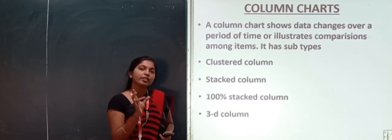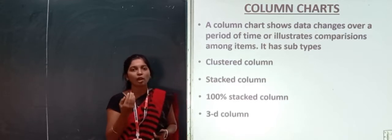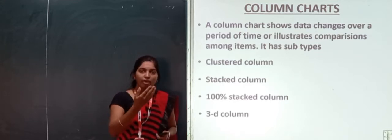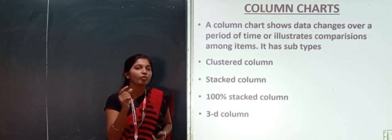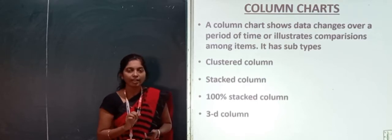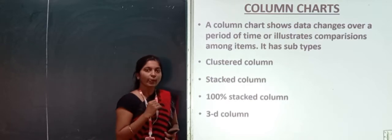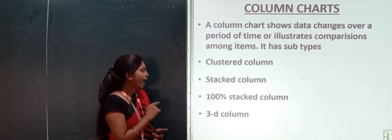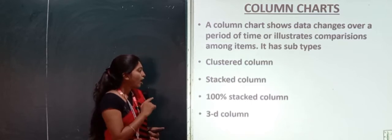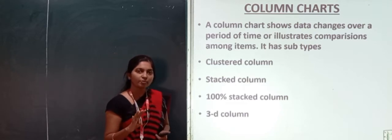So, what it does? It illustrates the comparison among the items. Different items. Suppose, I have three students. They have different marks. Among those three students, we compare the marks. How we show the marks, we show them column wise. This is called column chart. We have three or four types in our column chart. One is clustered column. Stacked column. Hundred percent stacked column. And 3D column. We have four types.